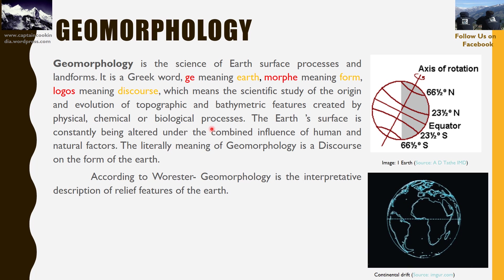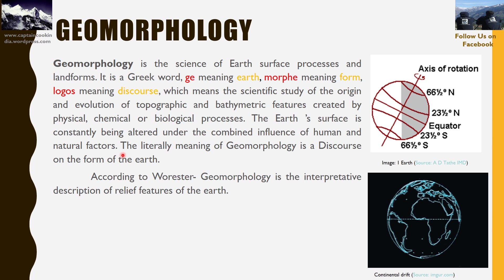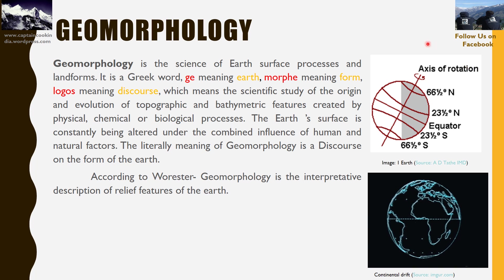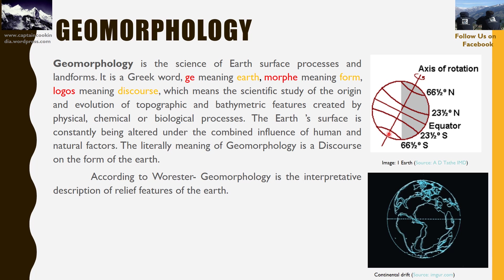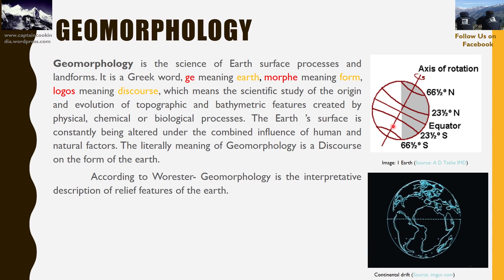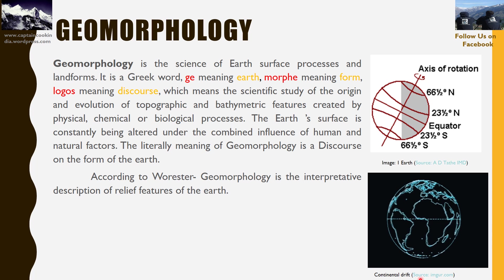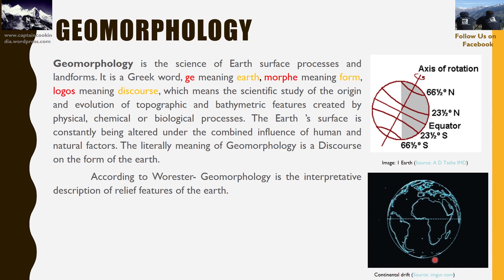The earth's surface is constantly being altered under the combined influence of human and natural factors. Basically it is a discourse on the form of the earth. The earth is 23.5 degrees tilted, and the imaginary lines include the equator at zero degrees, the Tropic of Cancer, Tropic of Capricorn, the South Pole, and the North Pole.